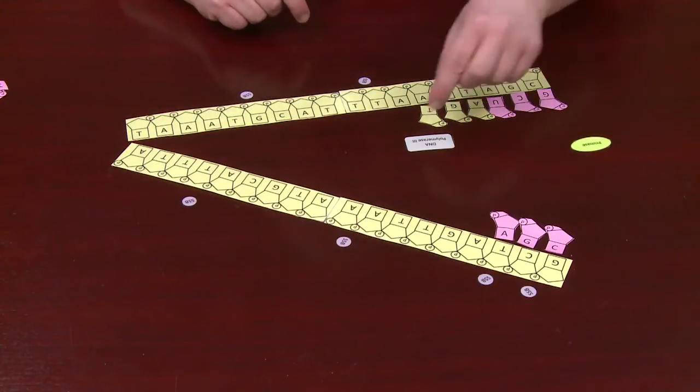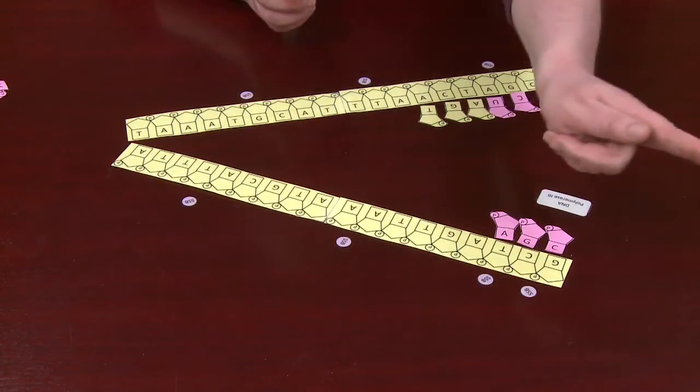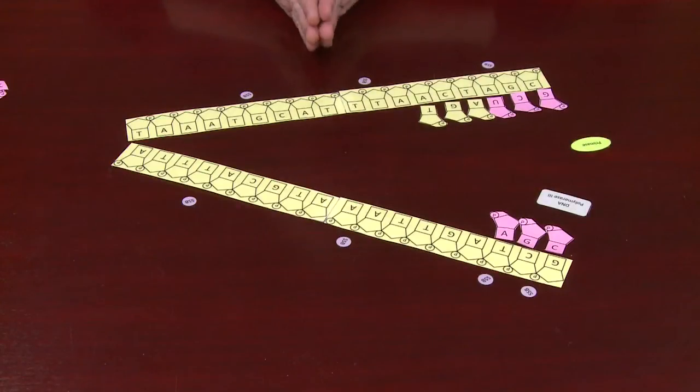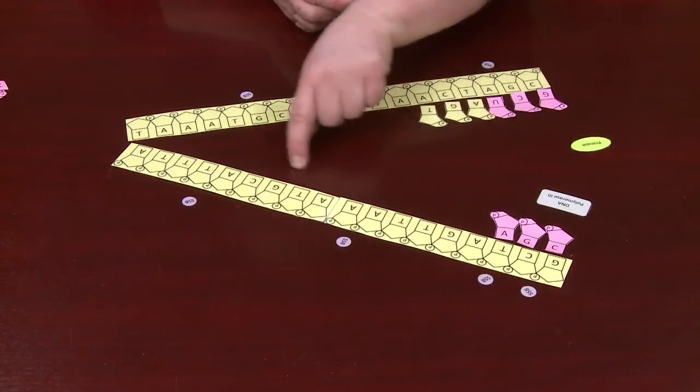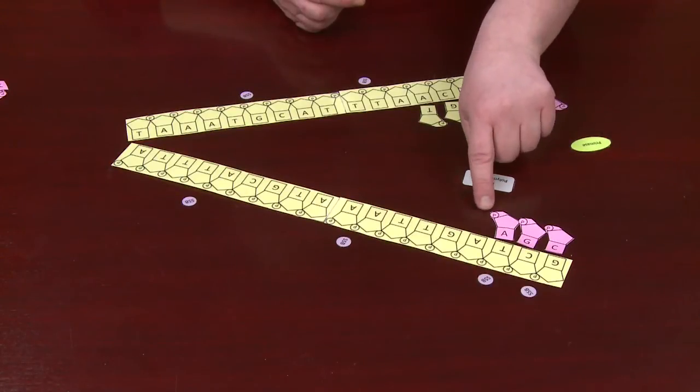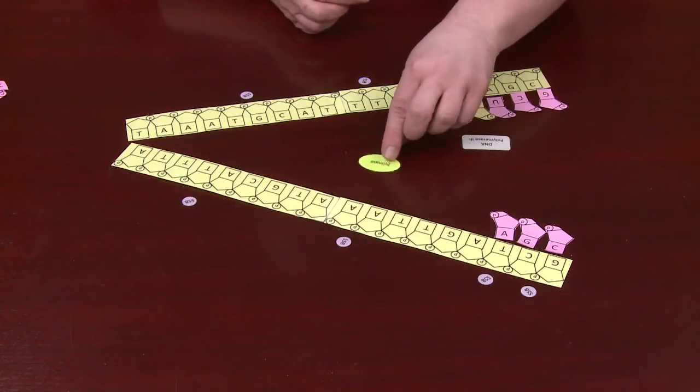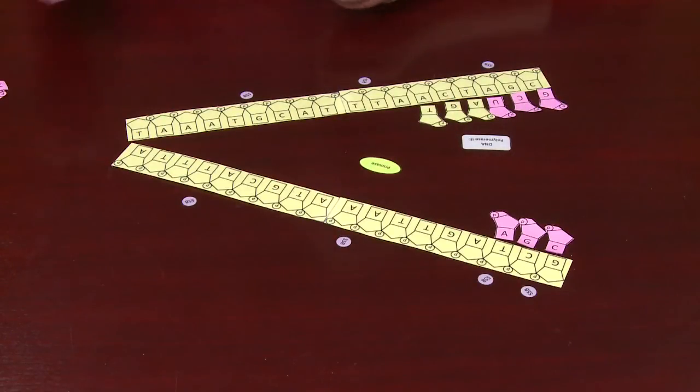DNA polymerase 3 will also synthesize on the opposite strand. It will synthesize in that direction from this free 3' hydroxy. But the problem is in here, DNA polymerase 3 can't add to that phosphate group. So primase has to come back in and start to synthesize another primer.